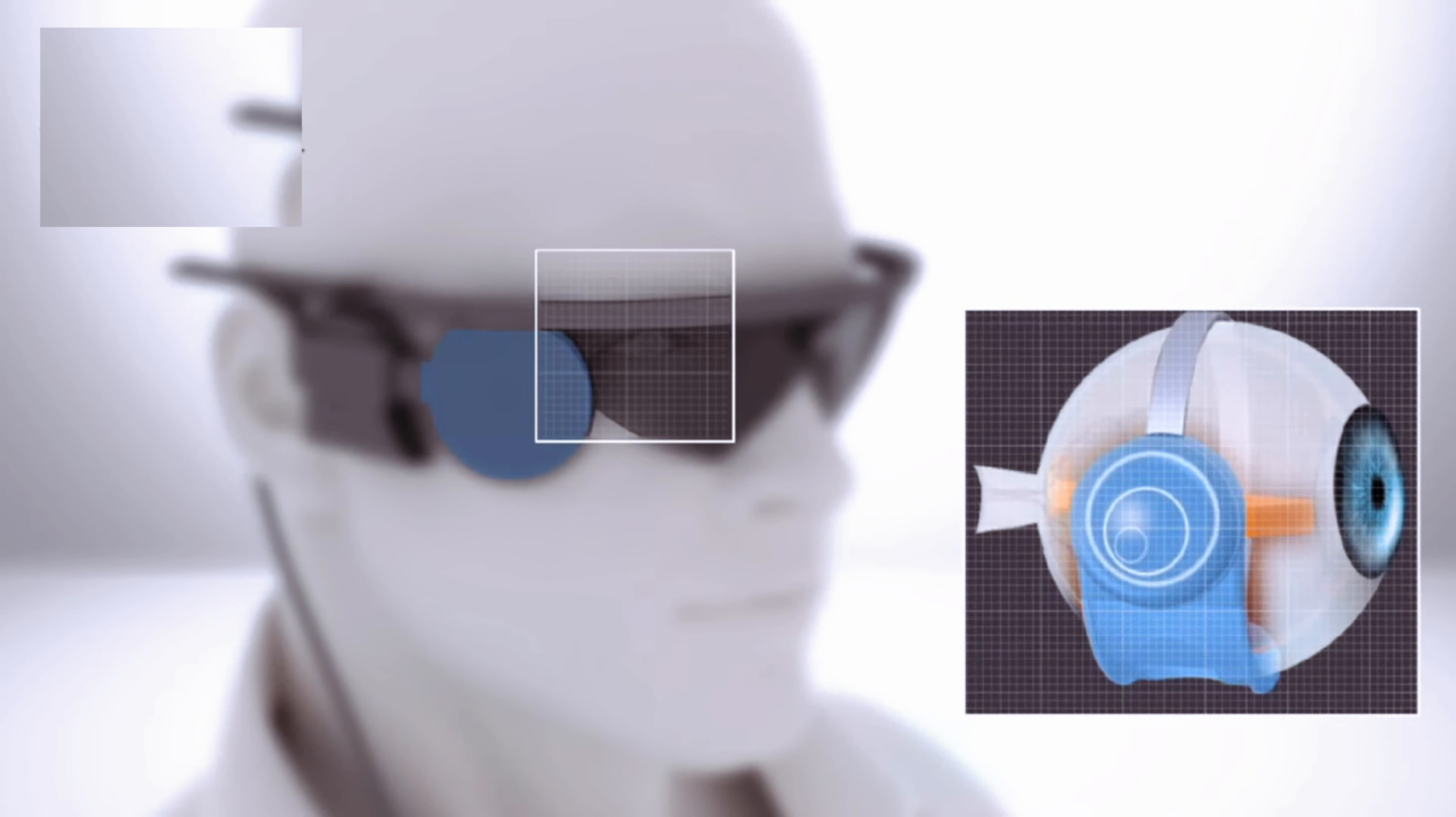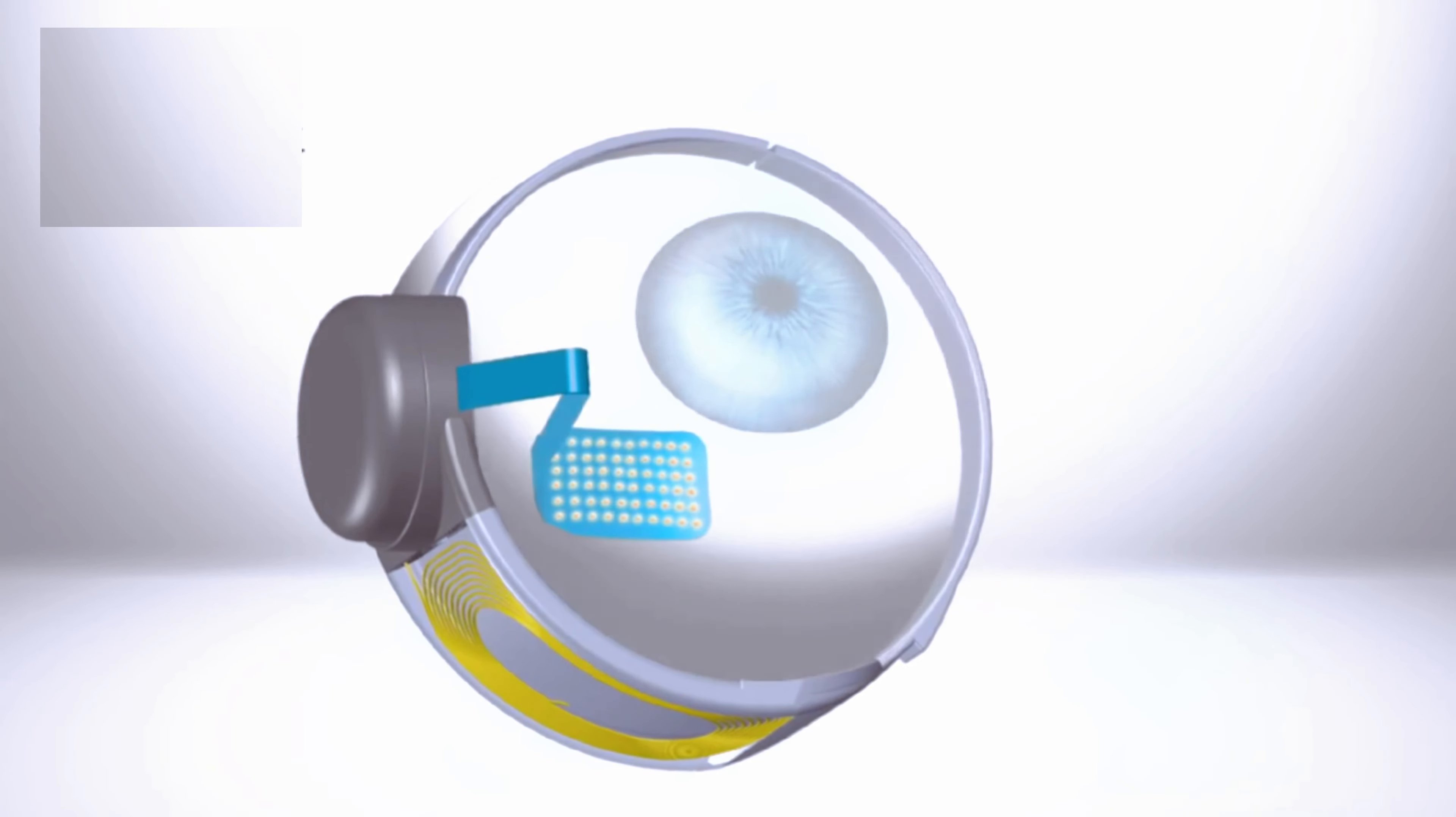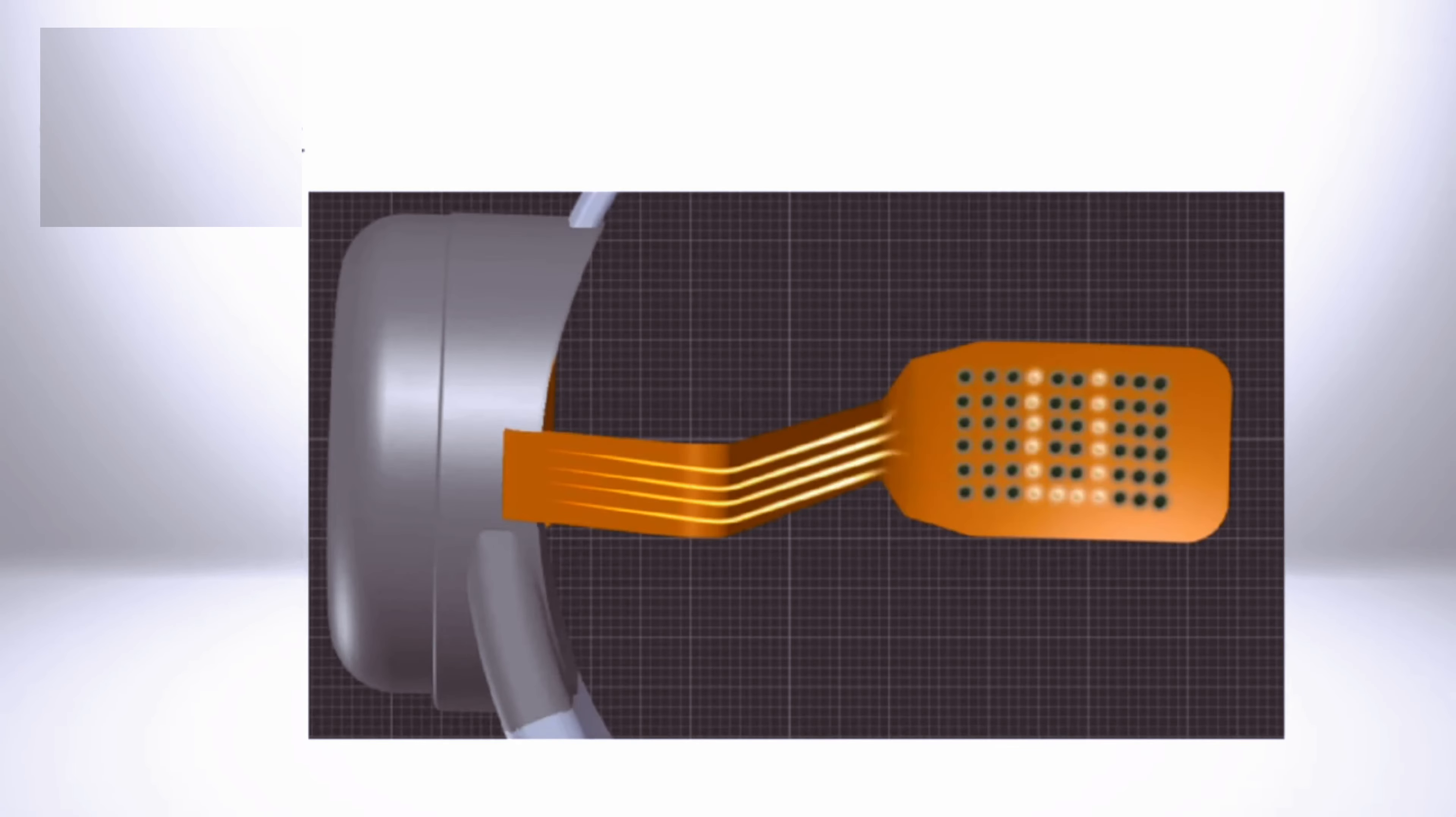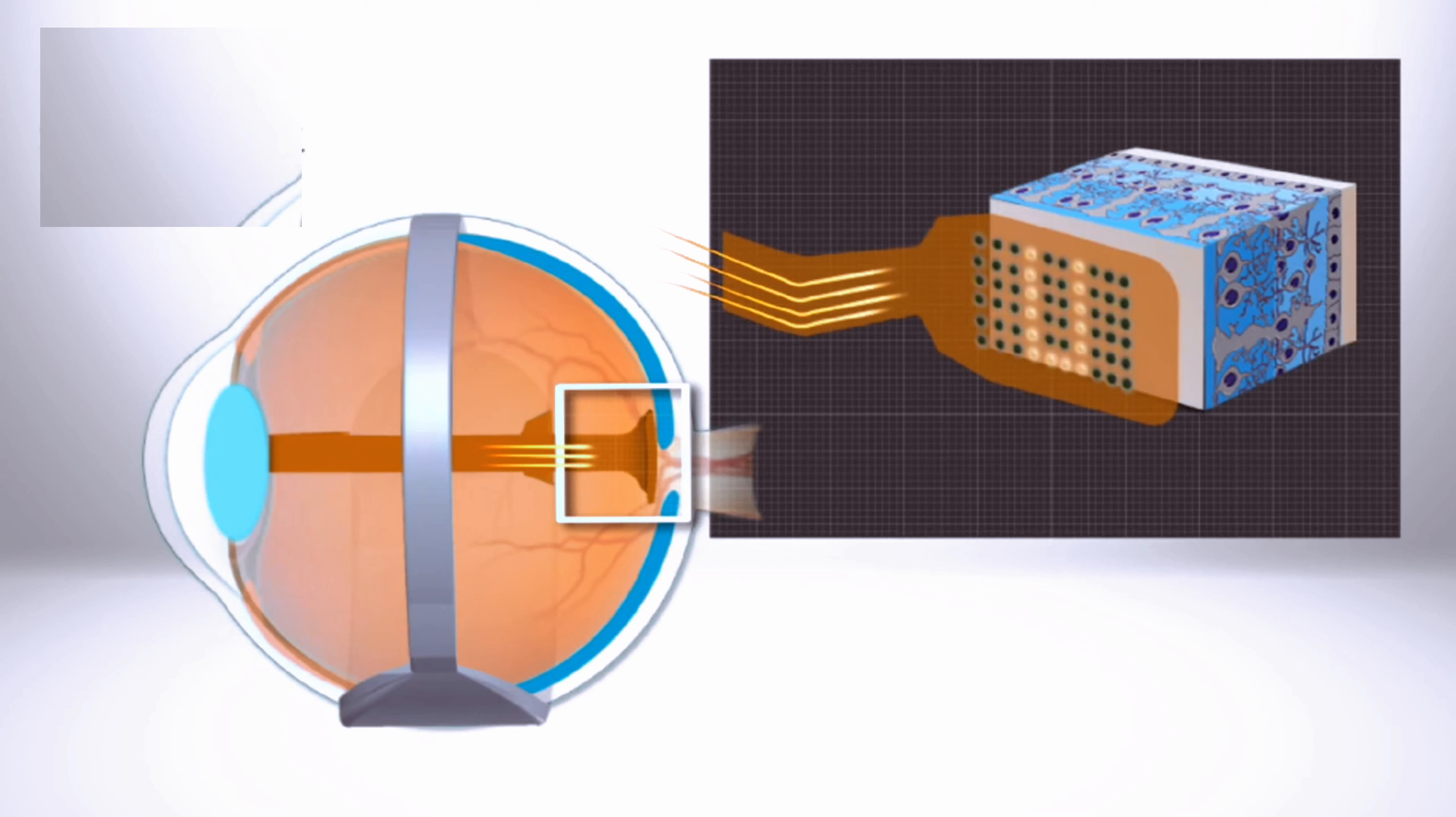The way it functioned was quite ingenious. Patients would undergo a surgical procedure where a small electrode or chip was implanted onto their retina. This implant acted as a conduit for sending electrical signals directly to the brain, effectively mimicking the process of natural vision.